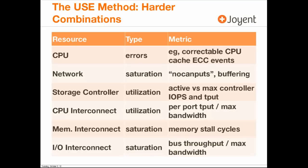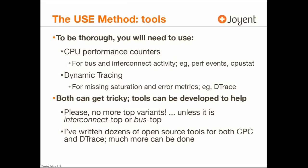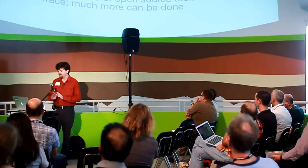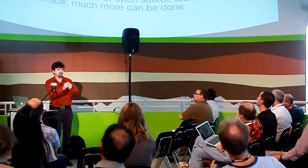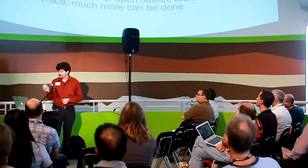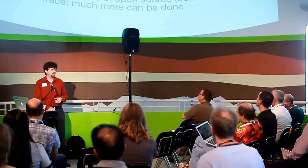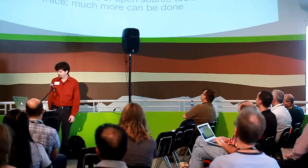Memory interconnect, IO interconnect — to be thorough, you will eventually need to use CPU performance counters. I do imagine that for some of these, for a while they're just going to be known unknowns, and you'll only do this if it's a really urgent customer issue. CPU performance counters are great for bus and interconnect activity. You need to get the CPU manuals from the vendors — they're really thick, spend some quality time. Dynamic tracing fills in for missing saturation and error metrics — DTrace can go into the kernel or applications and answer anything. Tools can be developed to help.